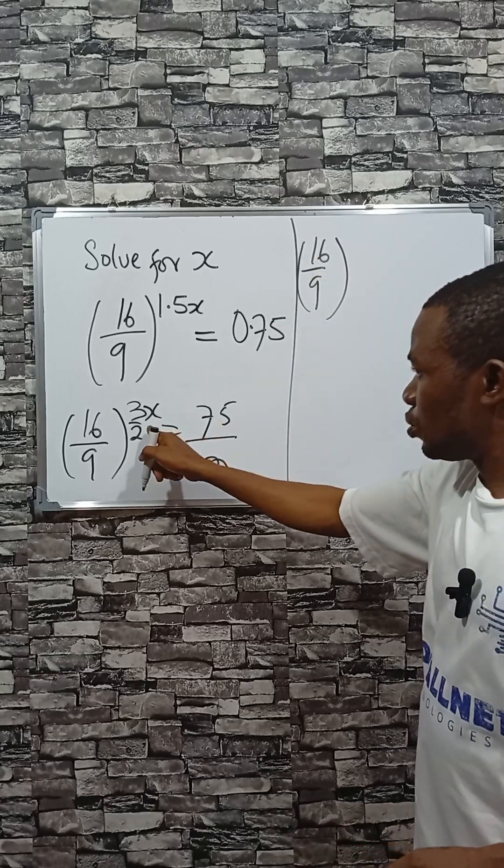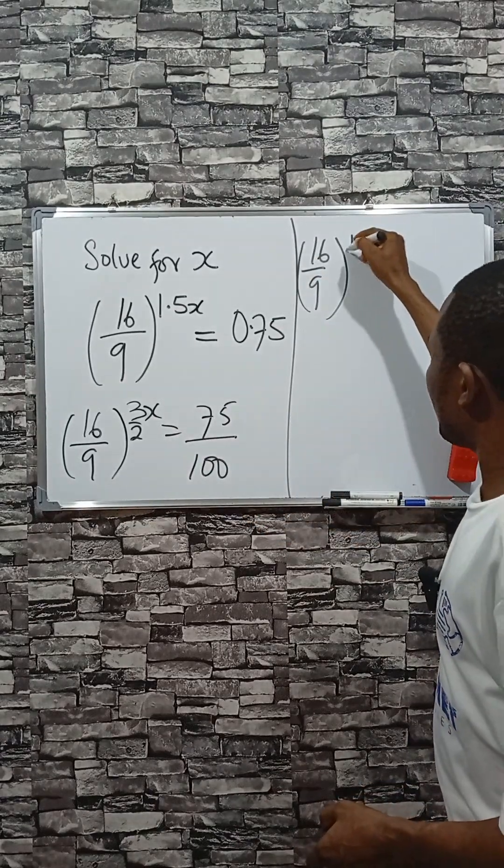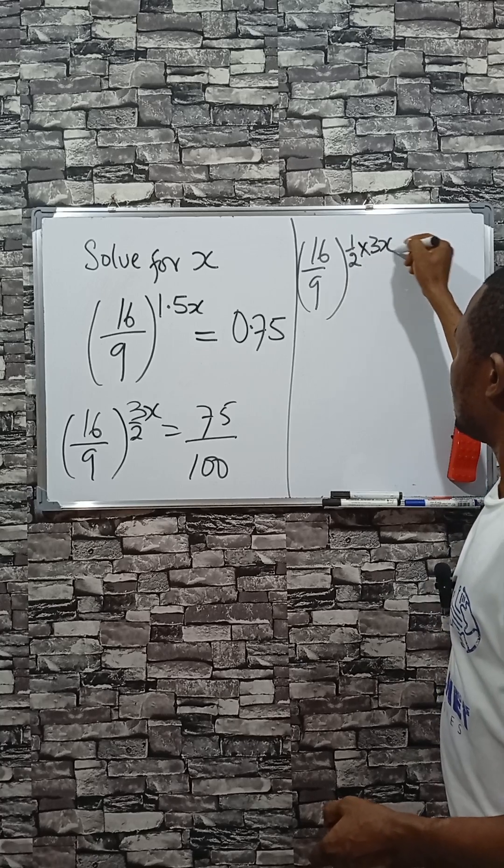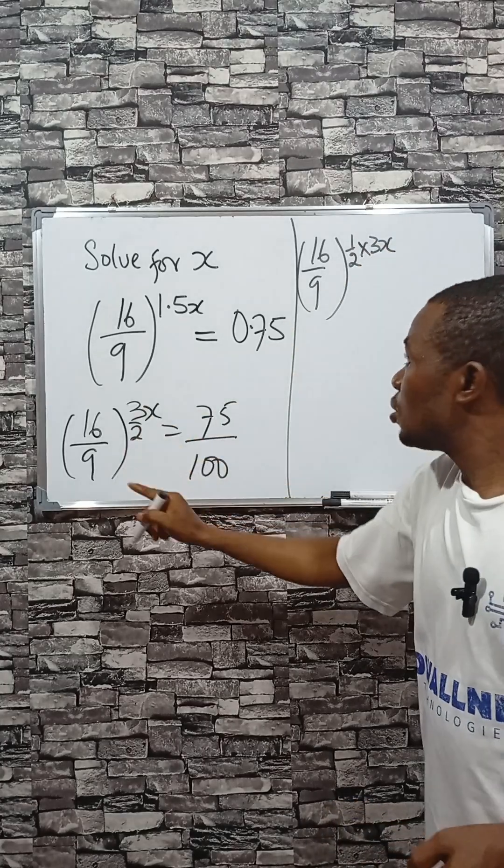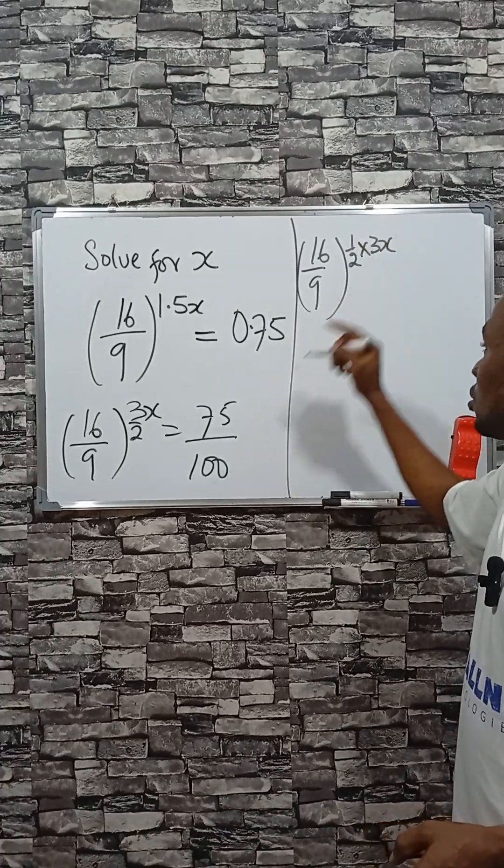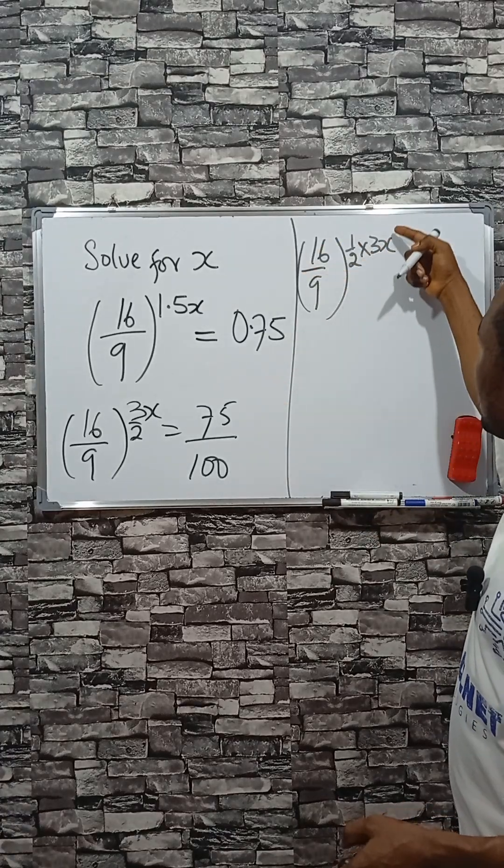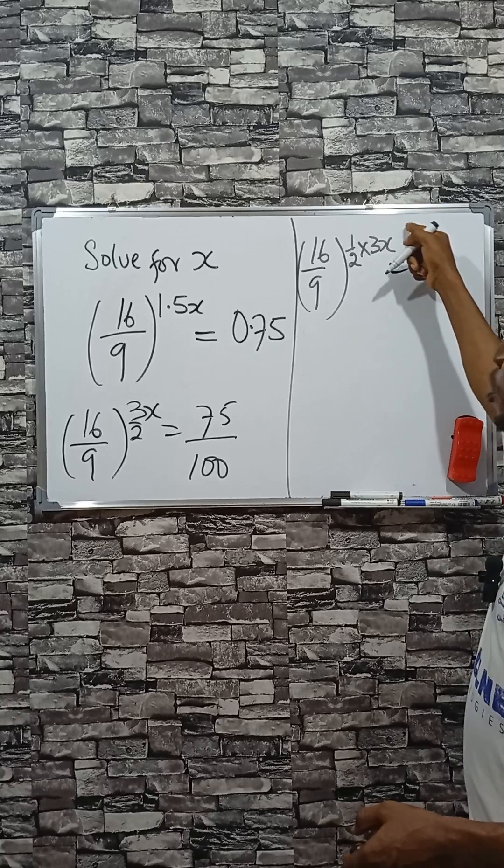I'm going to do something here. If I write 1 over 2 times 3x, see it's the same thing, because this means it is the square root of 16 divided by 9, then raised to the power of 3x.